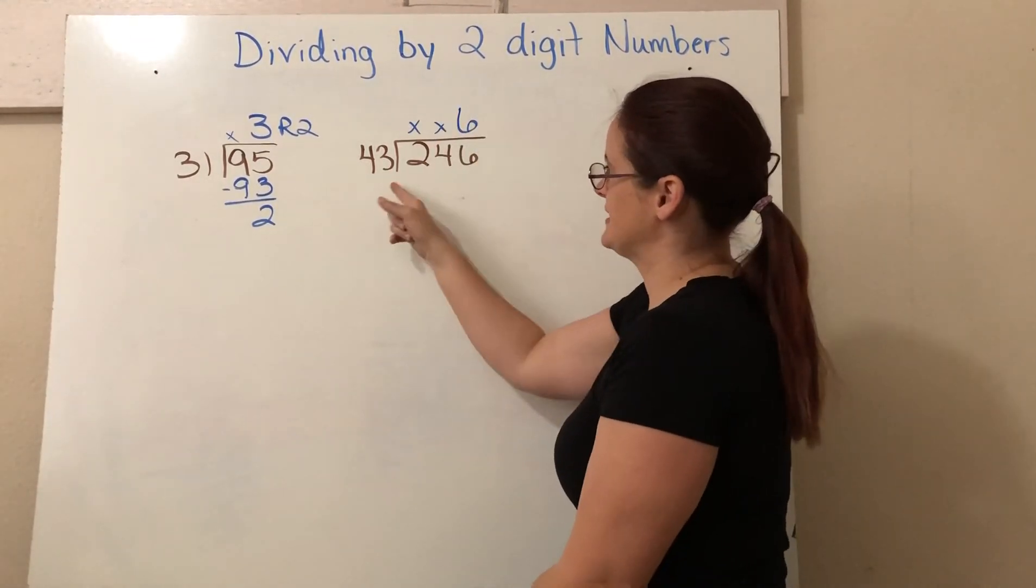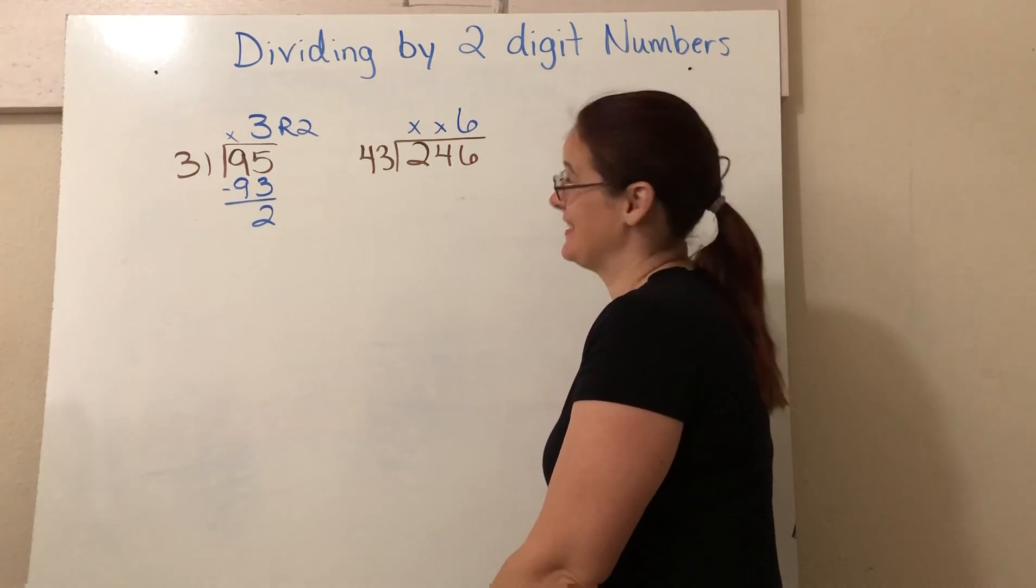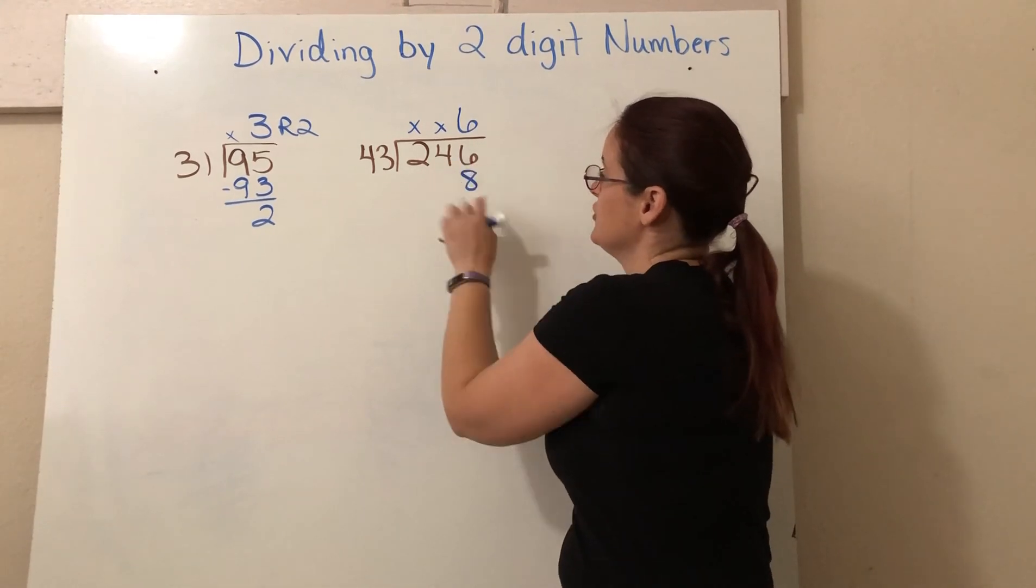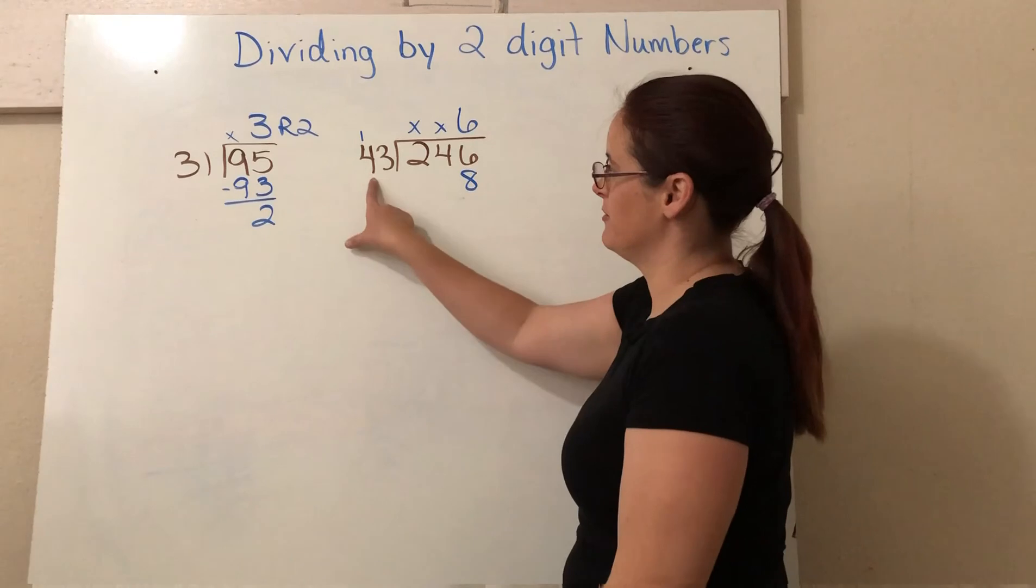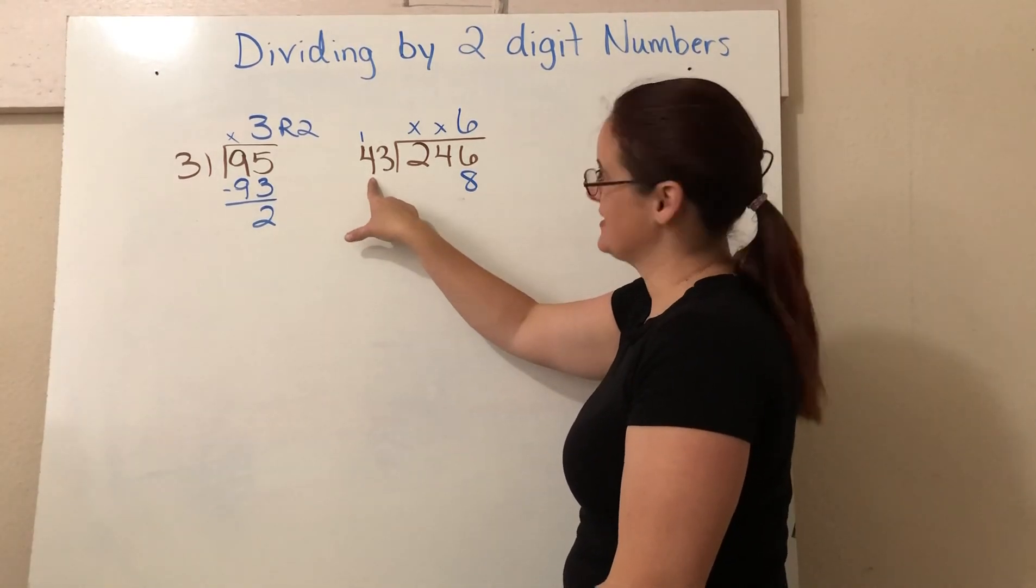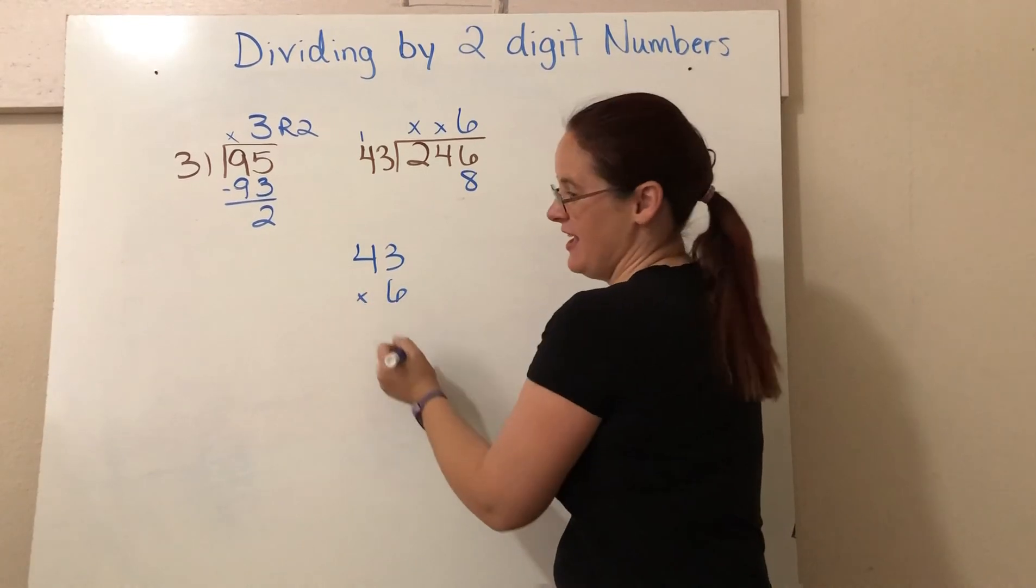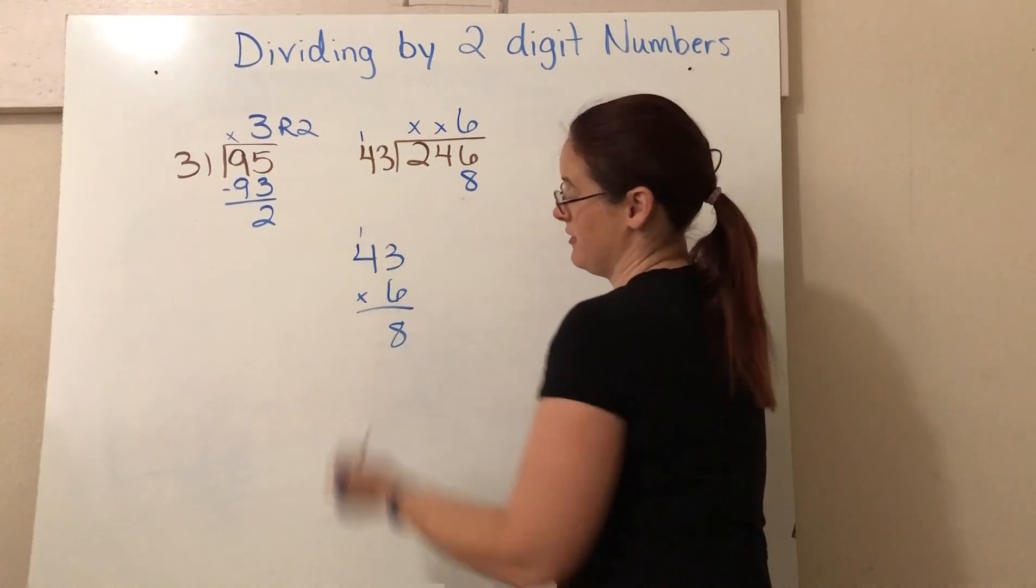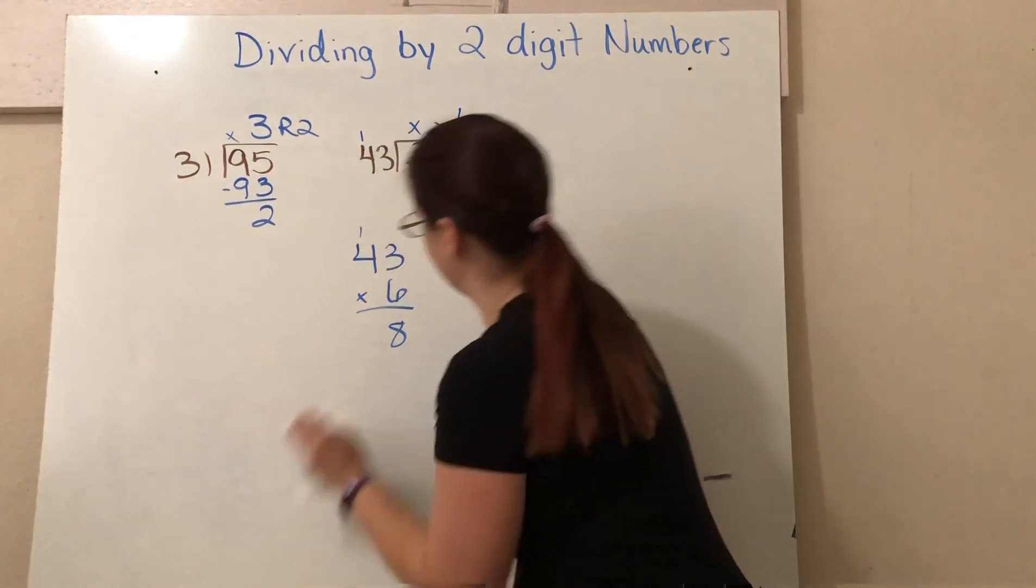What is six times three? That is 18. So I put my 8 here and I carry my 1 over above the tens. Just as if I were doing 43 times 6 this way, I would put an 8 here and I would carry my 1 above the 4. So it's the same concept. I just carry it over my 4 there.